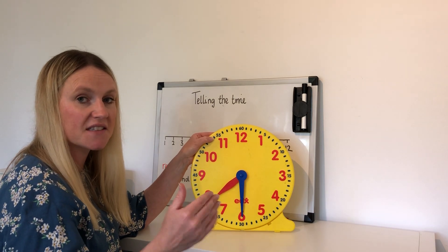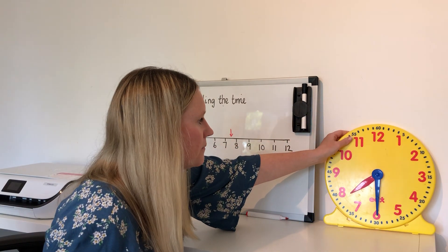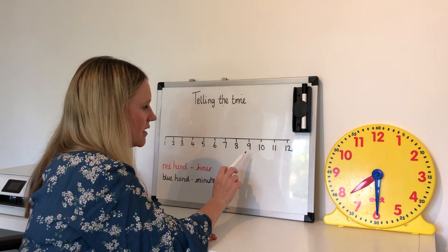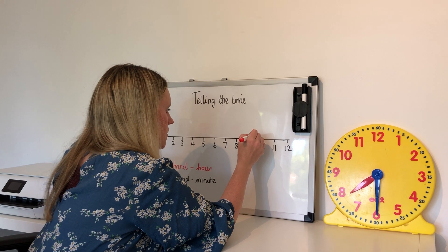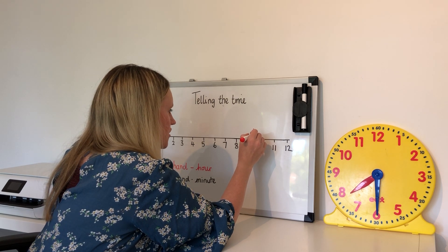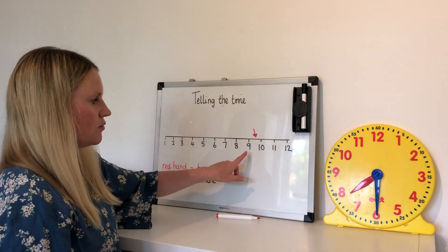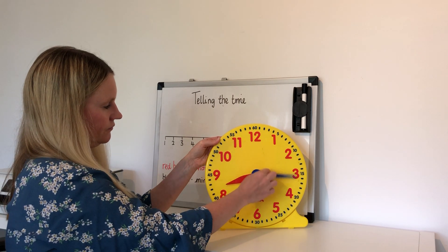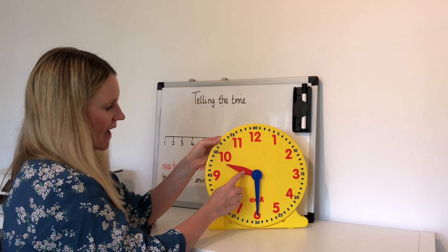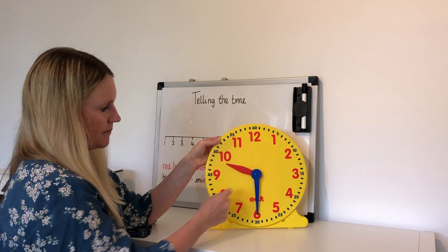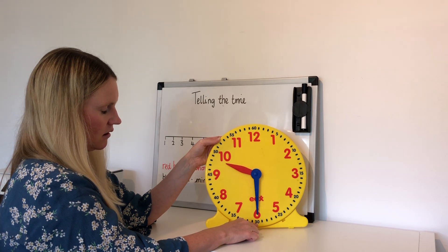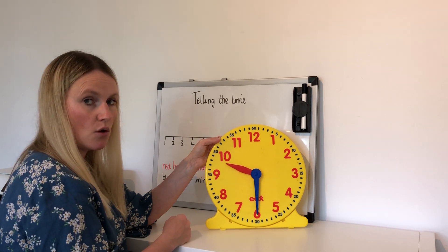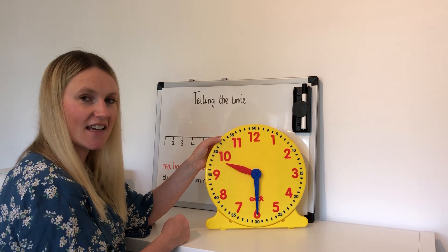Okay, let's look at another half past. This time I'm going to put my hour hand in between the nine and the ten. Have a think about what time I'm going to show. If the hour hand is between nine and ten... okay, so my hour hand is between nine and ten and my minute hand is pointing to thirty — it's gone past the nine, so it's nine thirty, or you could say half past nine. Can you say half past nine? Half past nine!